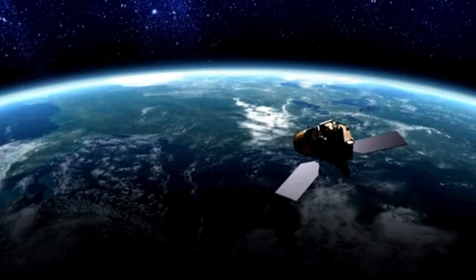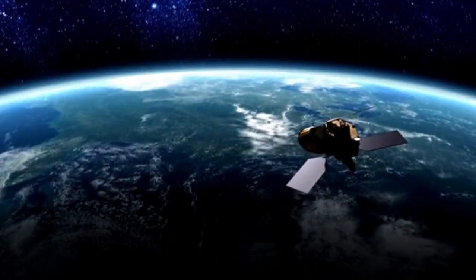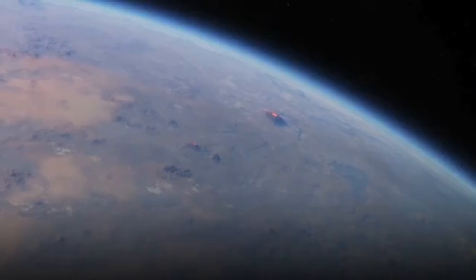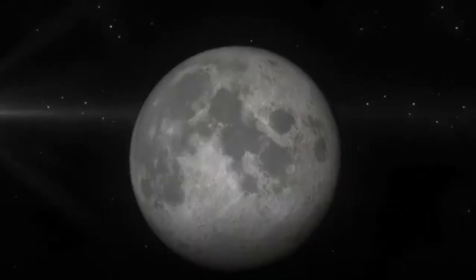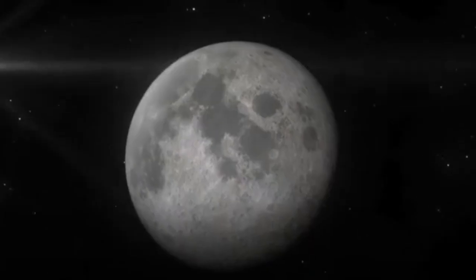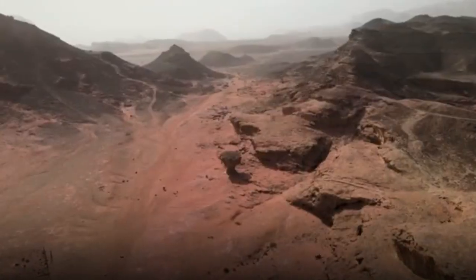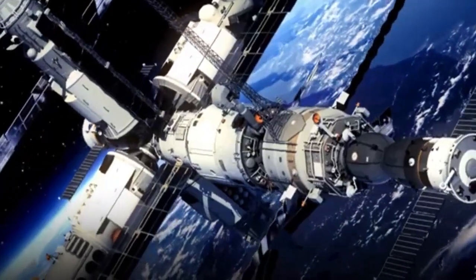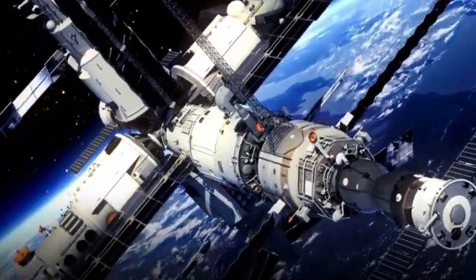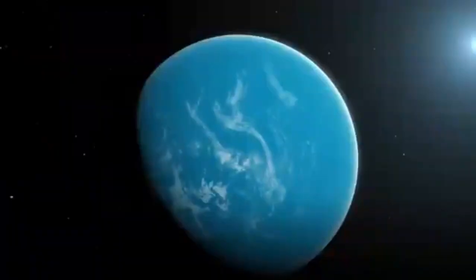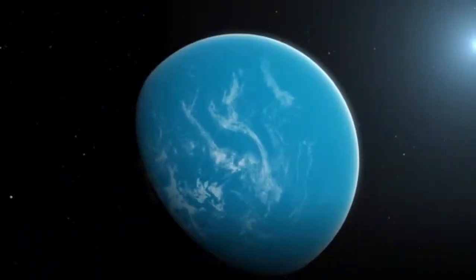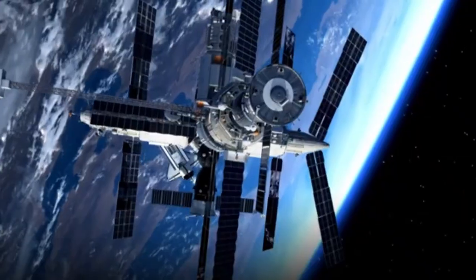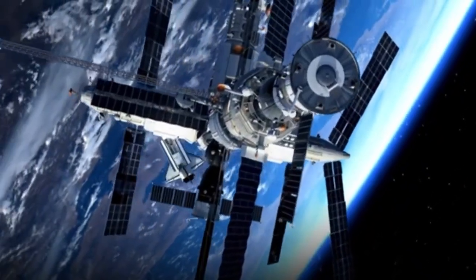Enter the James Webb Space Telescope, humanity's sharpest eye on the cosmos. Launched in 2021, this $10 billion masterpiece orbits a million miles from Earth, peering into the universe's deepest secrets. Its infrared vision can pierce the darkness, picking up the faintest traces of light and heat from distant worlds. Unlike other telescopes, Webb can see through cosmic dust, analyze planetary atmospheres, and detect signals that others miss.